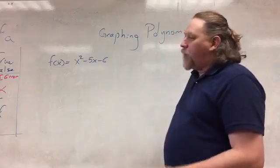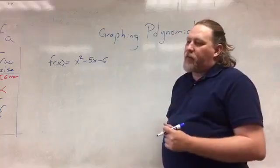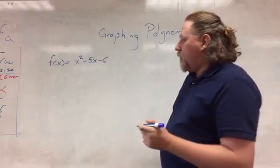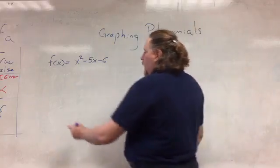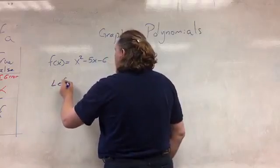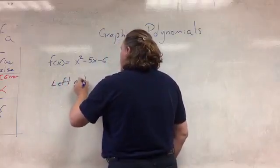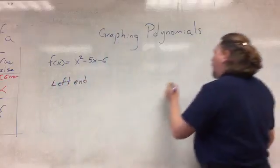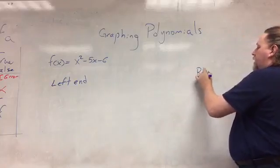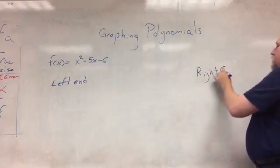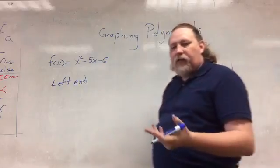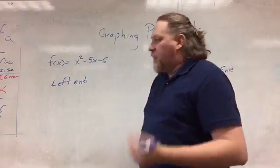I have a function here, x squared minus 5x minus 6. The first thing I'm going to do is look at the end behavior — what does this graph do over on the left end, and what does this graph do over on the right end? And then we're going to look at what does this graph do in the middle.